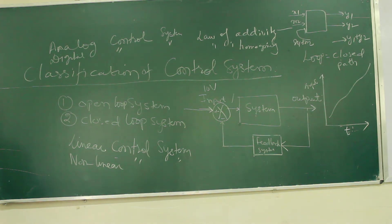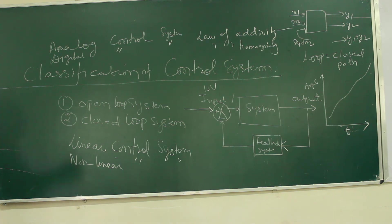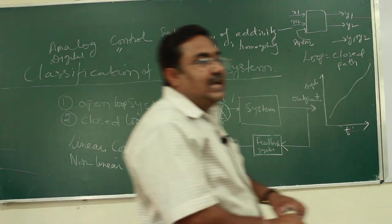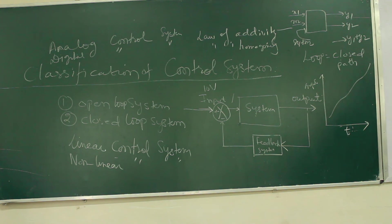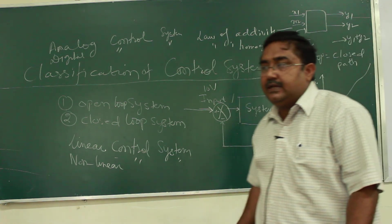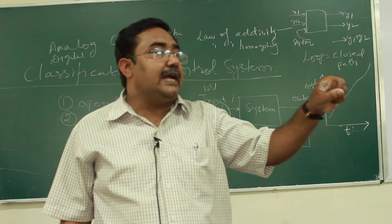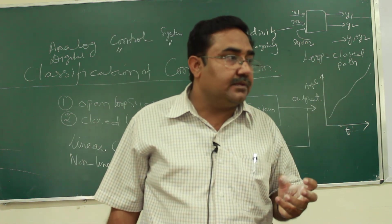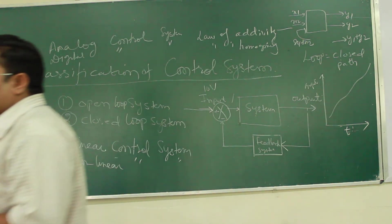Time variant and time invariant system. If in a control system, the parameters are varying with respect to time, we say the system is a time variant system. And if the parameters value remain constant, we call it a time invariant system.